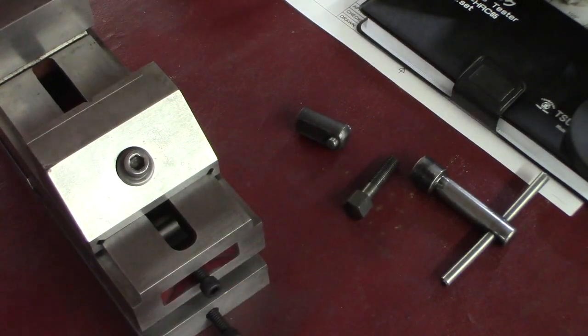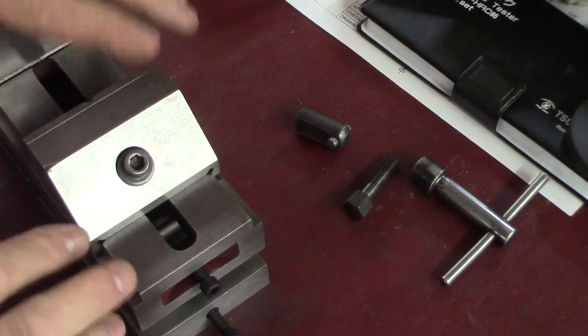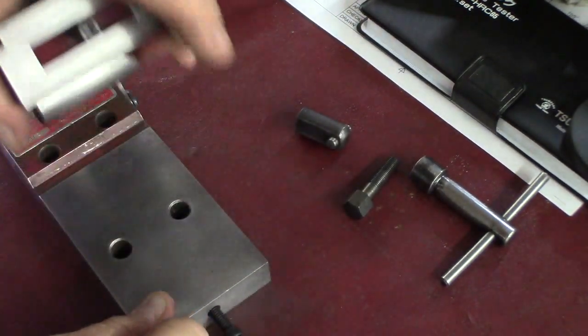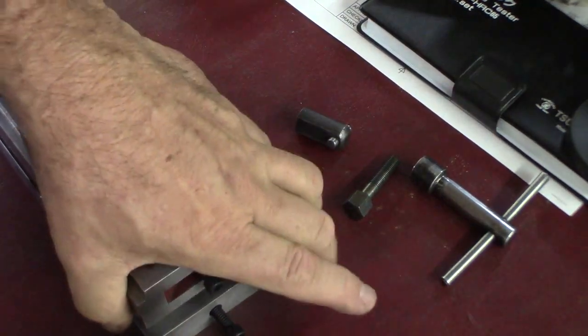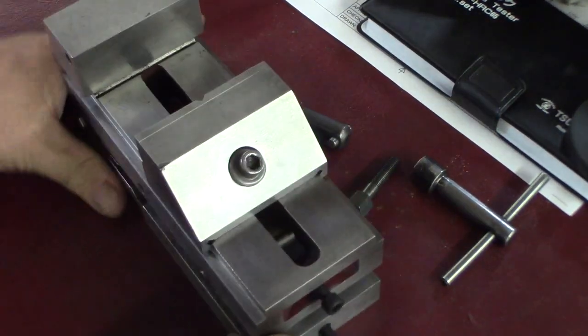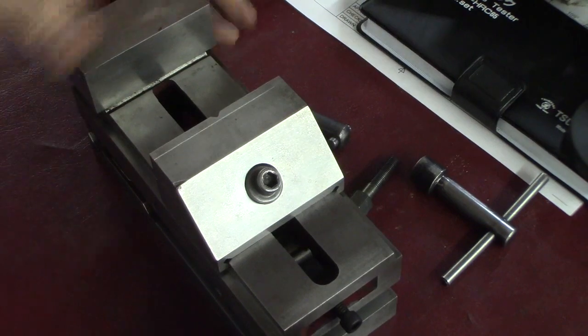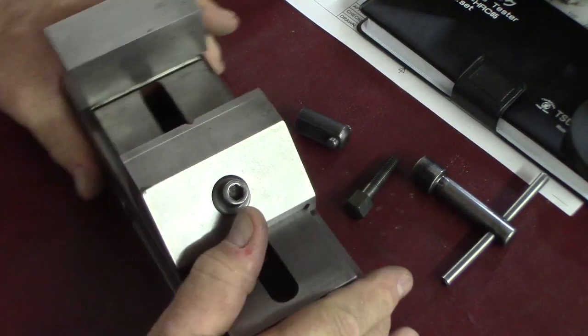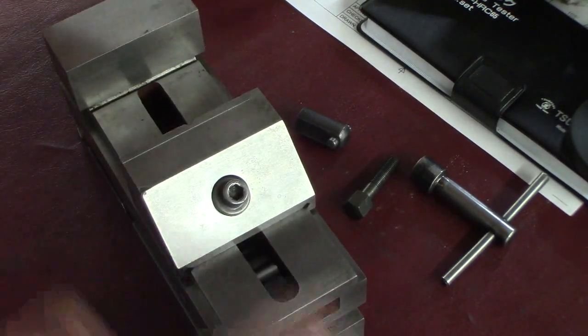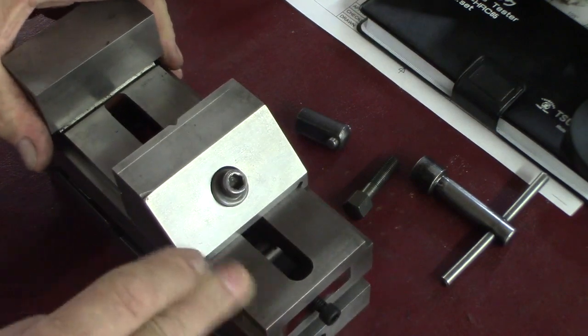This is a little quick project I did. This is a Suburban Tool sine vise, a tool maker's vise or grinding vise, whatever you want to call it. I've cleaned it up a little bit. I picked it up on eBay and I think I've showed it before.